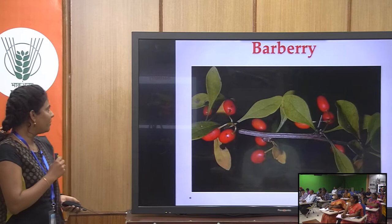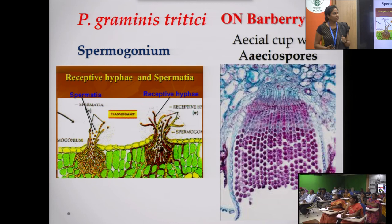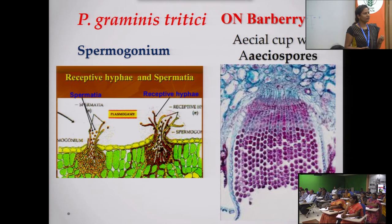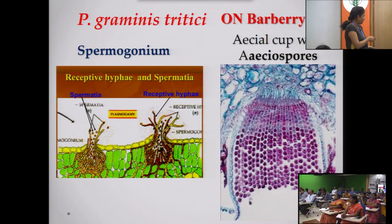Barberry and wheat are the two hosts. First, we will see the spore stages produced on the barberry plant. The first structure is the spermogonium. Until a long period of time, scientists and scholars thought that the spermogonia had no role in the life cycle of Puccinia graminis tritici — it was considered a functionless asexual spore. But in 1927, the scientist Craigie discovered that spermogonia play a major role in the completion of the life cycle.